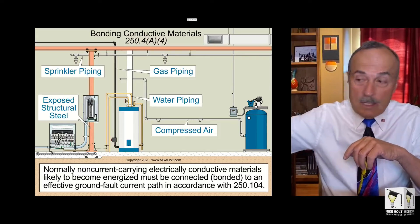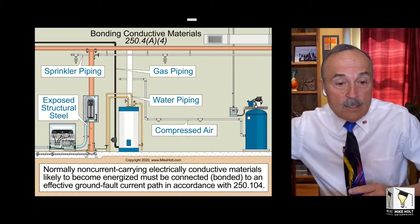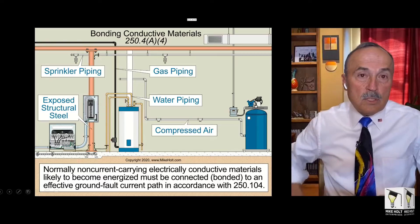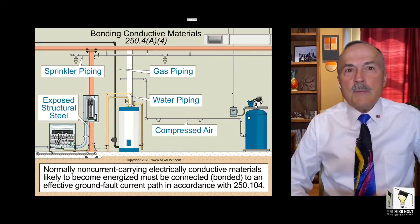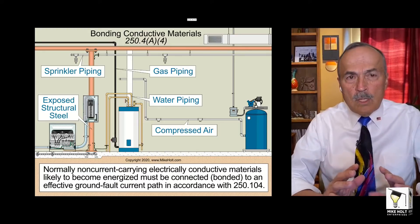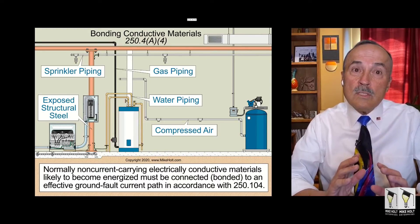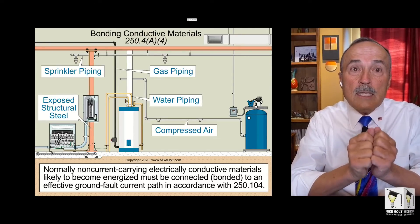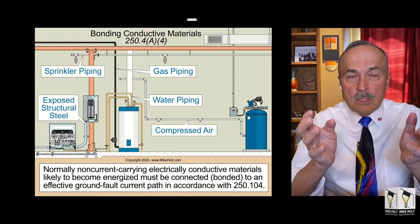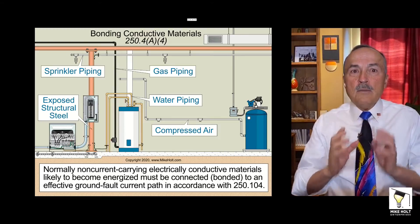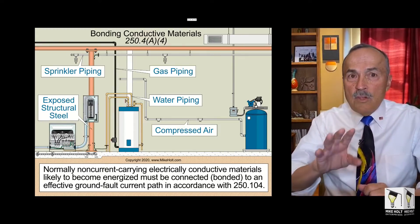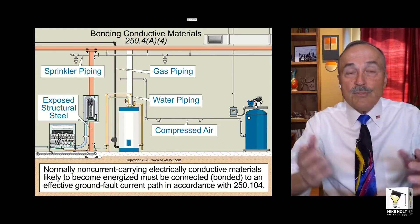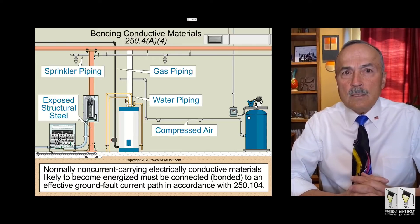NEC 250.4(A)(4) states that normally non-current-carrying electrically conductive materials likely to become energized must be addressed. According to the NFPA NEC Code Style Manual, 'likely to become energized' means there are actually conductors present. For example, if you have a box and you put electrical conductors in it and mount it on something, then whatever you mounted it on is likely to become energized — like a fence post.